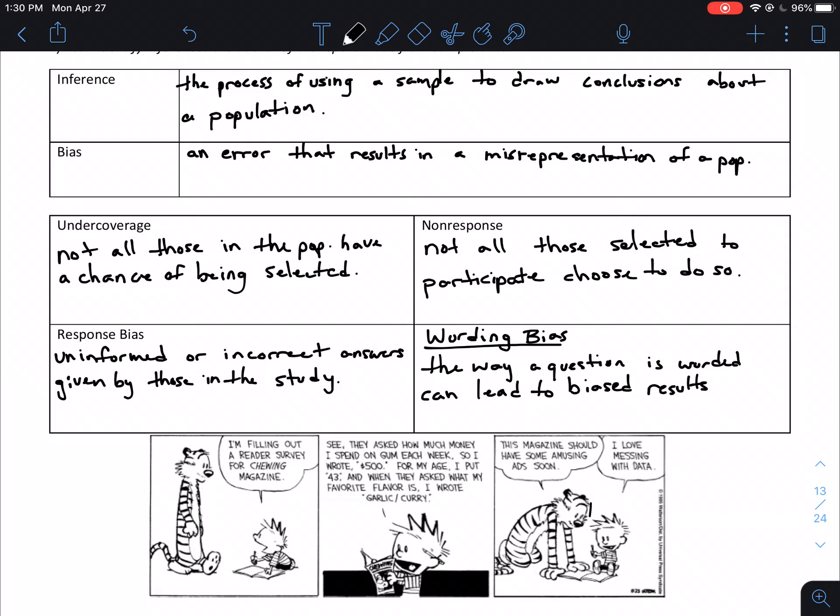But one problem with that is that sometimes there can lead to bias, which is an error that results in a misrepresentation of a population. So if for whatever reason your data is biased or skewed in some way, that can sometimes result in some errors with regards to your population. So let's talk about some specific types of bias.